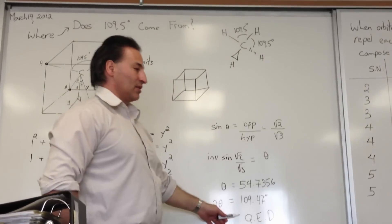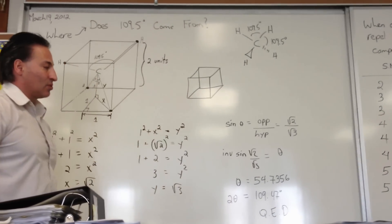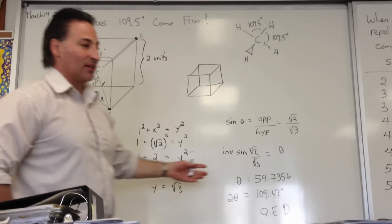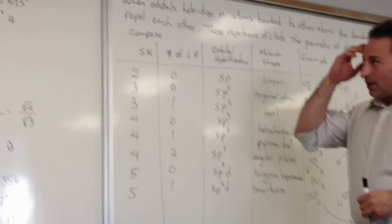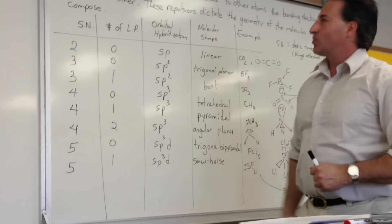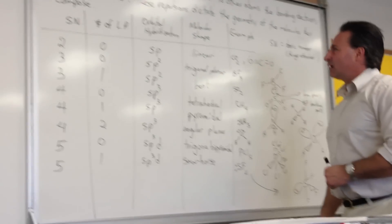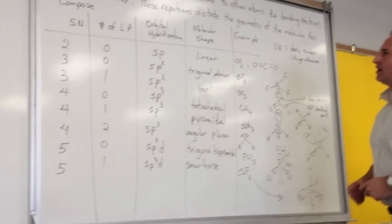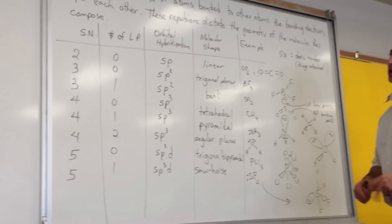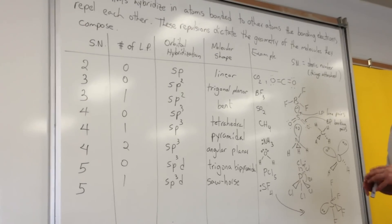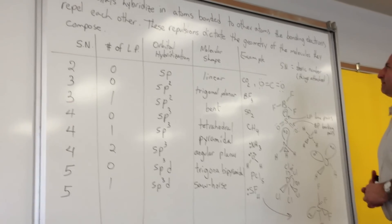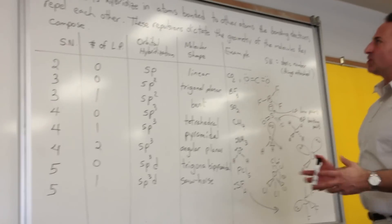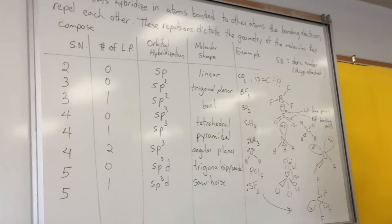I wrote Q.E.D. here to symbolize the Latin phrase 'quod erat demonstrandum,' meaning 'thus what we were trying to prove has been proven.' To continue: when we hybridize orbitals, we have to begin with the premise that electrons — bonding electrons and lone pairs — will repel each other, and these repulsions dictate the geometry of the molecules they compose.